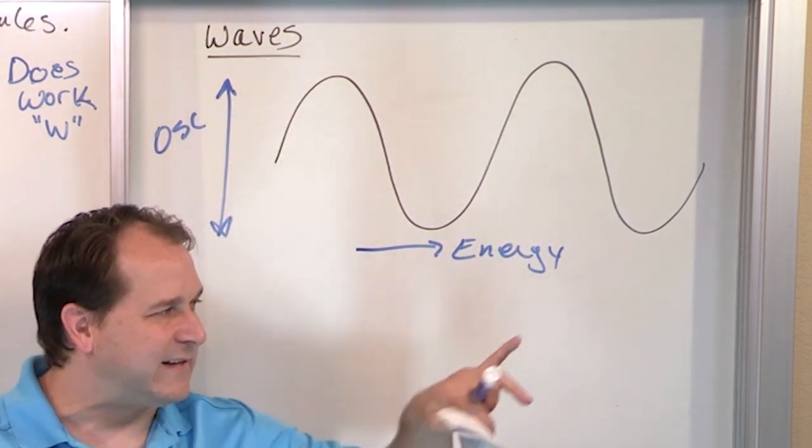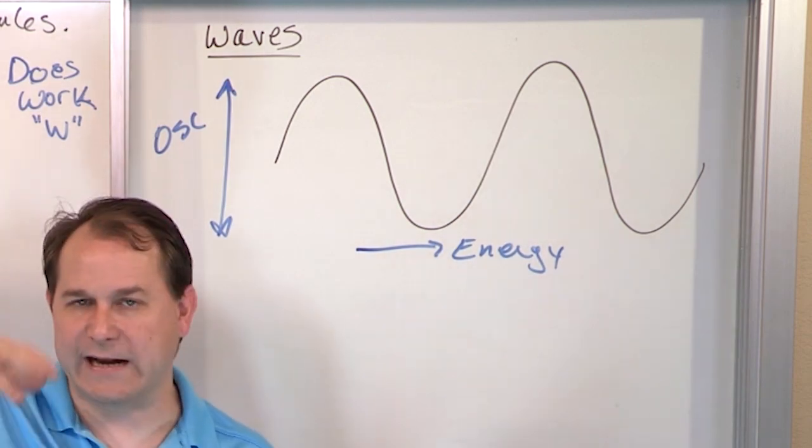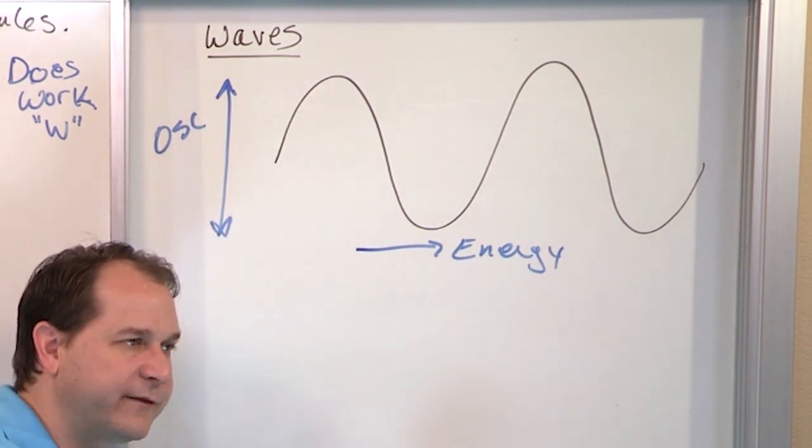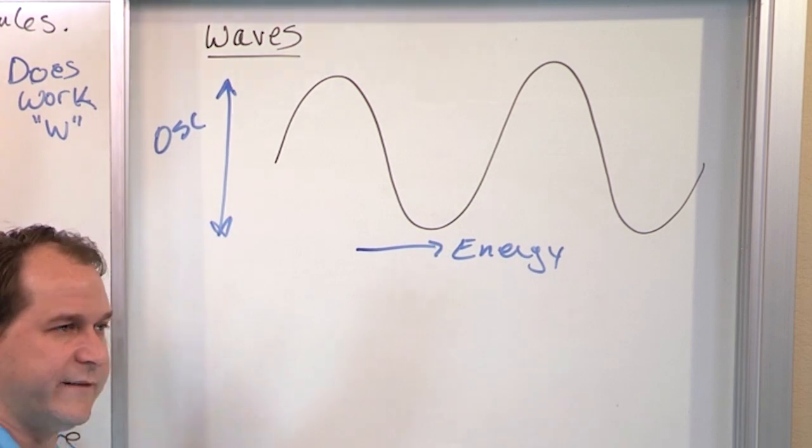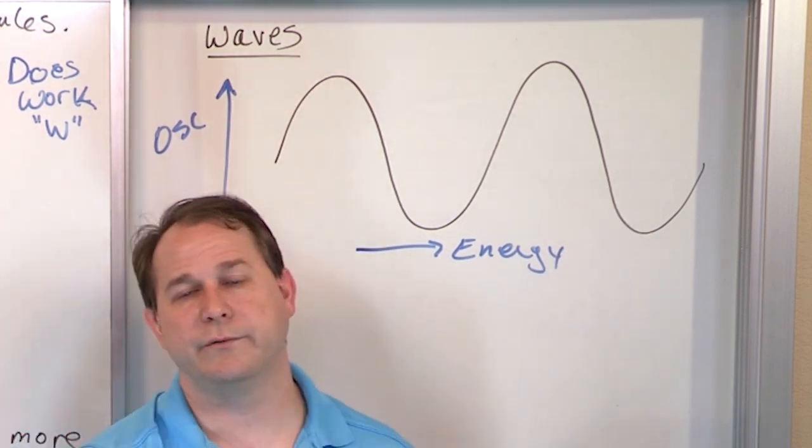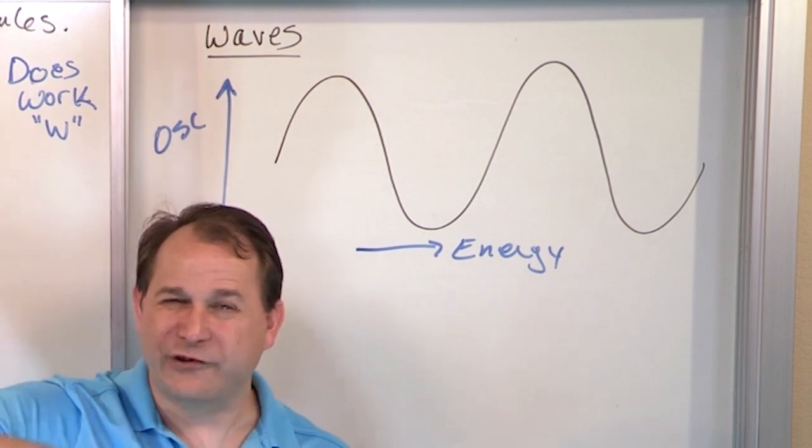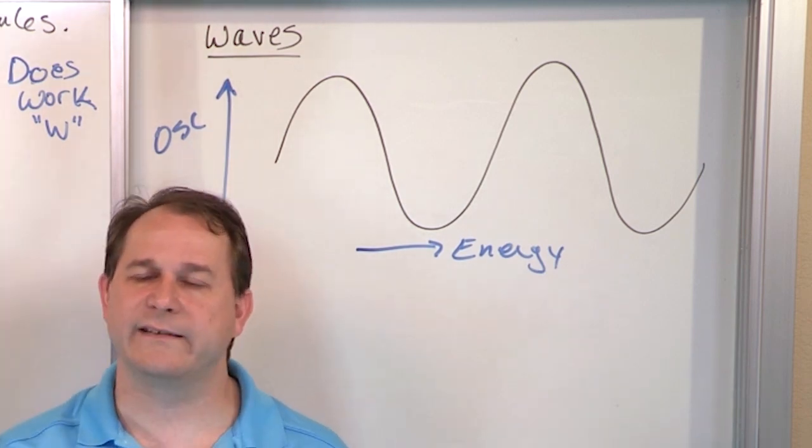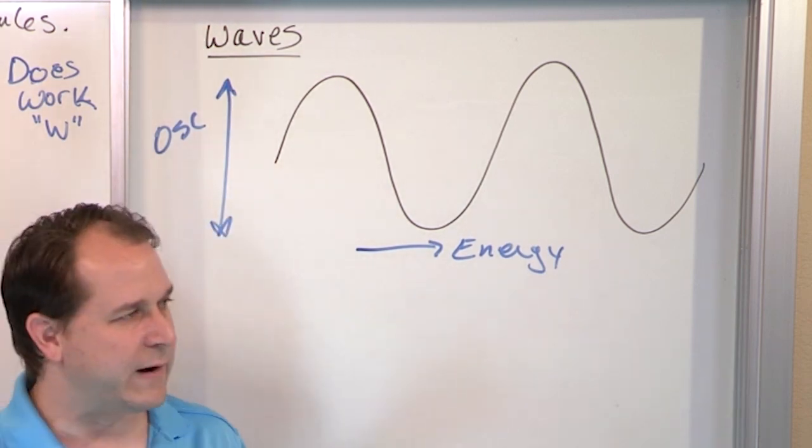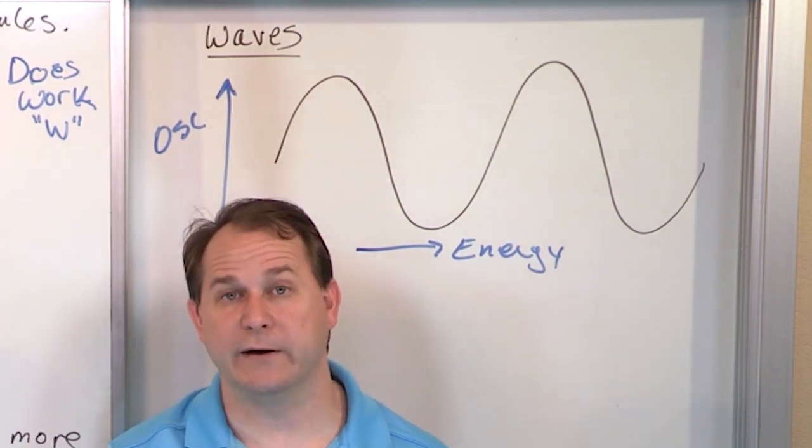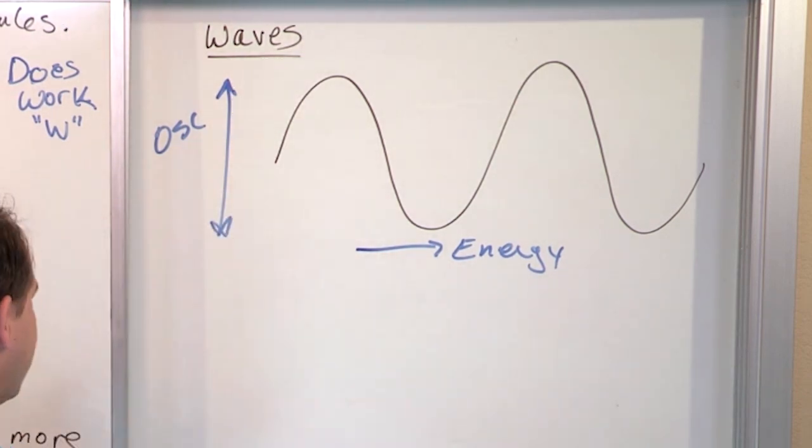So you can also see this with a rope. If I take a rope and I tie it to the wall or I get my friend to hold it and I've got the other end, I can start oscillating it up and down and it's going to start to propagate along the rope. And it's going to hit my friend's hand. And if I shake it hard enough, his hand's going to start wiggling because I'm taking energy from my hand, transmitting it through a wave, hitting my friend. And so I can use this kind of wave to transmit energy.